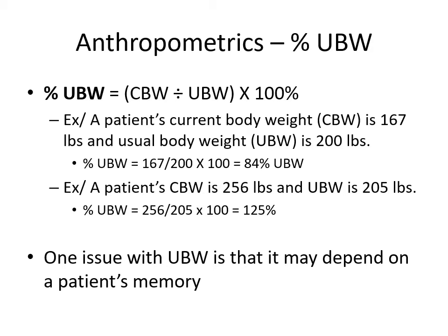Percent usual body weight = current body weight ÷ usual body weight × 100%. For example, a patient's current weight is 167 pounds and they usually weigh 200: 167 ÷ 200 × 100% = 84% of usual body weight. Another example: current weight 256 pounds, usual weight 205 pounds: 256 ÷ 205 × 100% = 125% of usual body weight. The limitation is that we rely on the patient's memory to determine what they usually weigh.